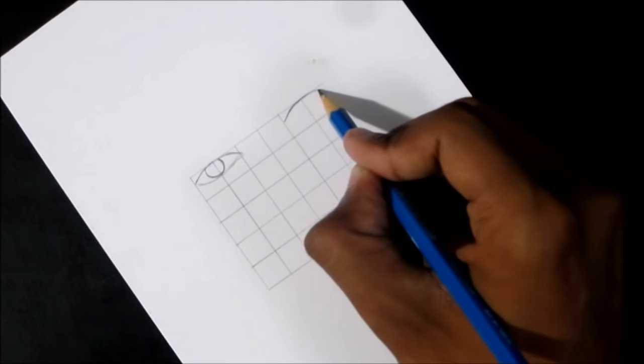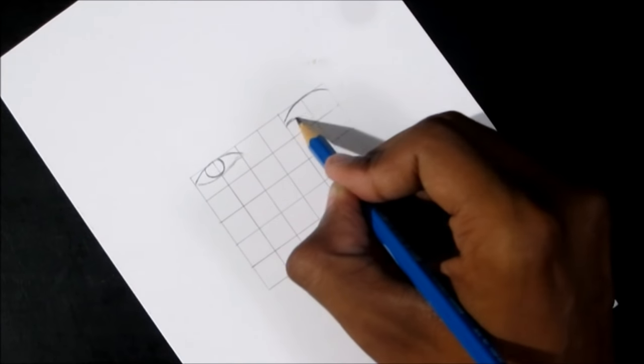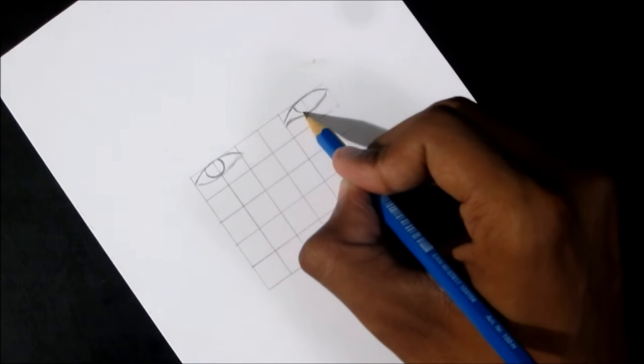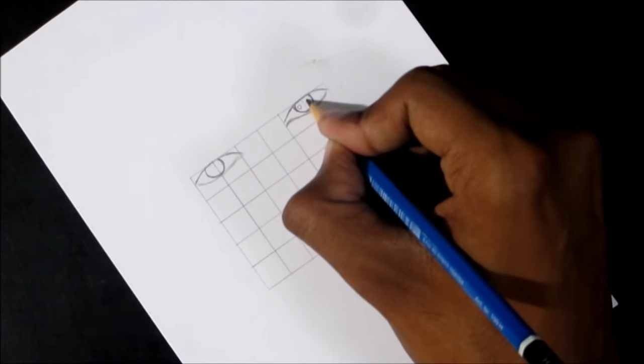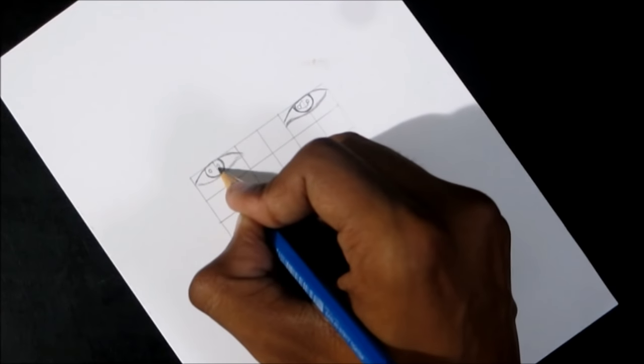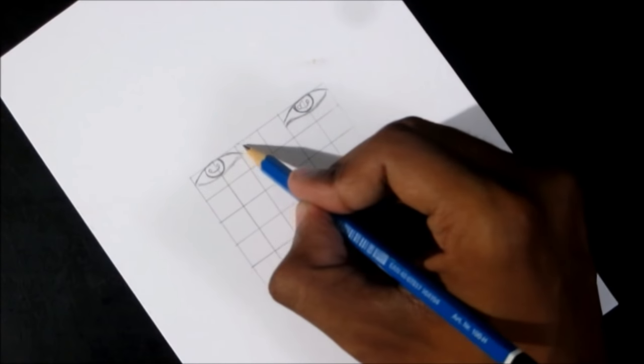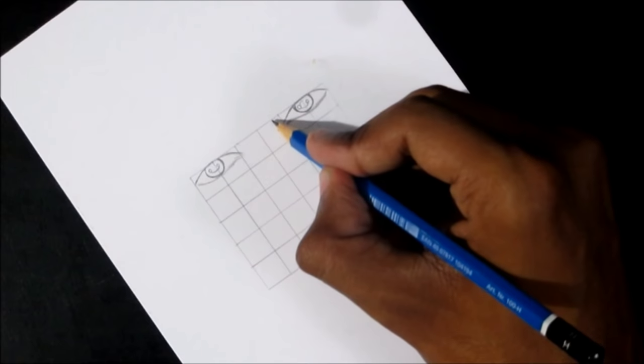Repeat the same method for the second eye by taking the last two boxes. Draw the top of the nose in the remaining two boxes of the first row.